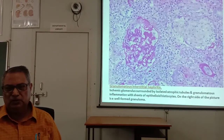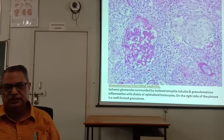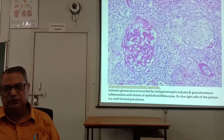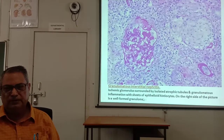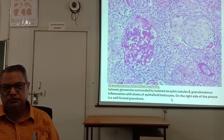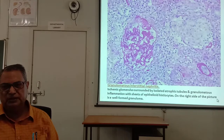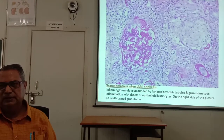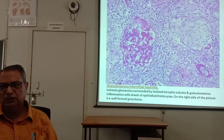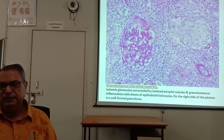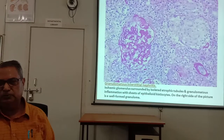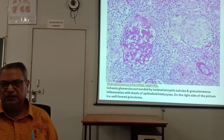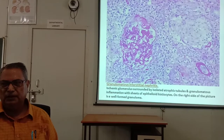Granulomatous interstitial nephritis shows ischemic glomeruli surrounded by isolated atrophic tubules and granulomatous inflammation with sheets of epithelioid histiocytes. Well-formed granulomas with central necrosis, giant cells, epithelioid cells, and hyaline granular necrosis are the characteristic features.